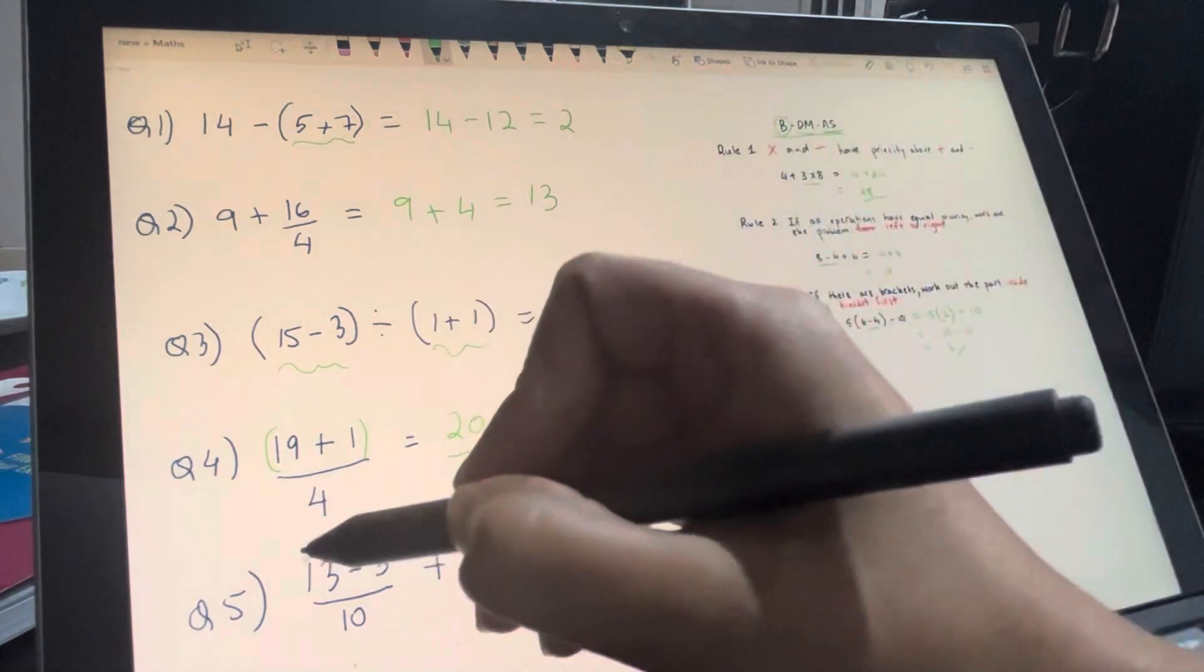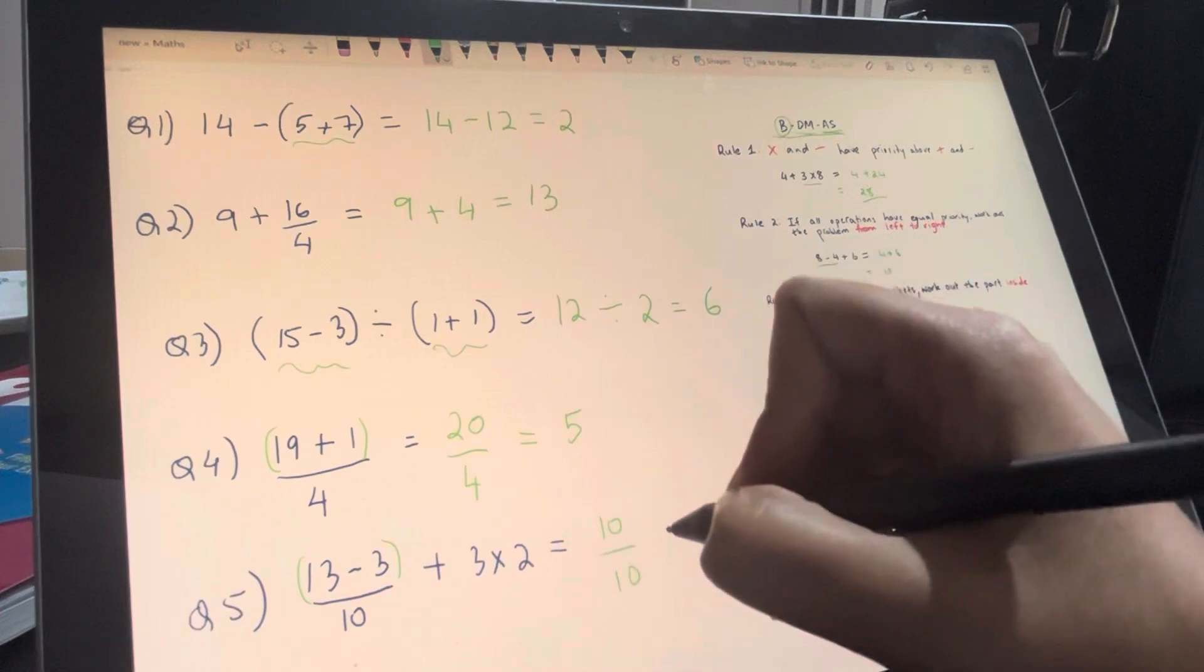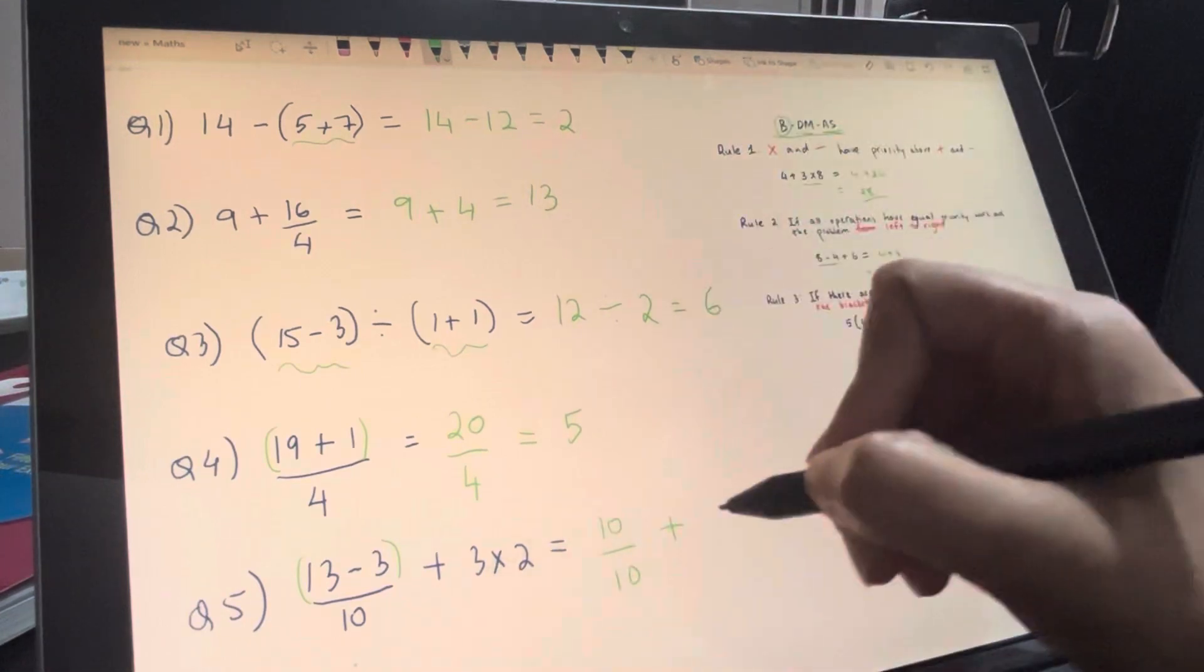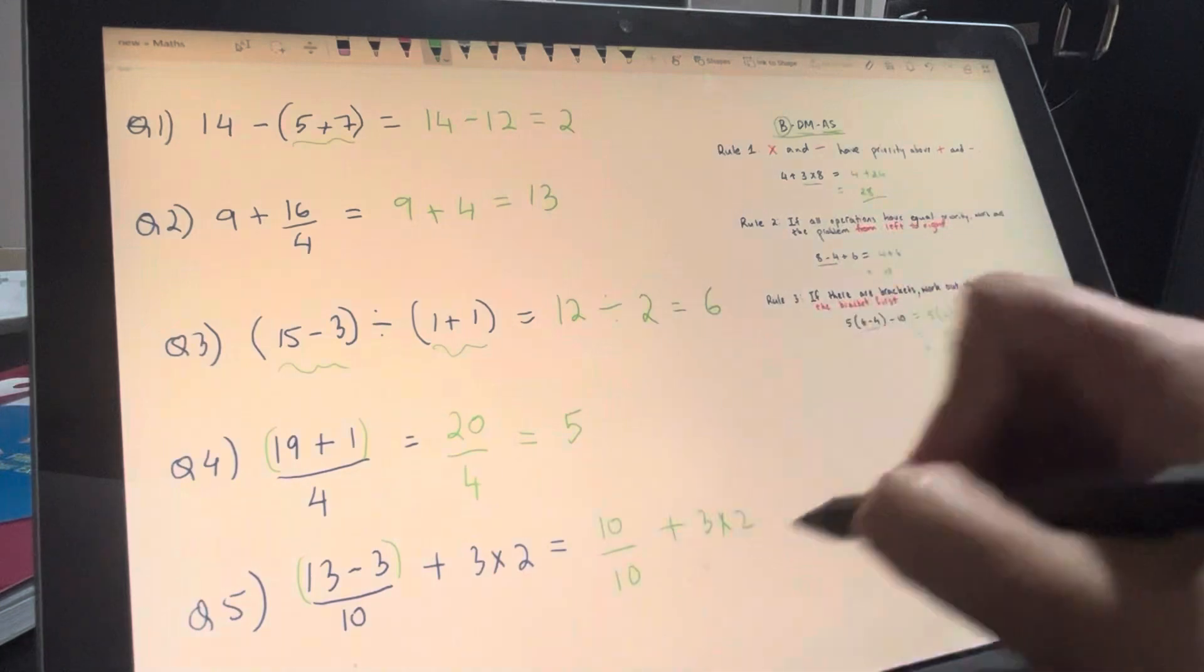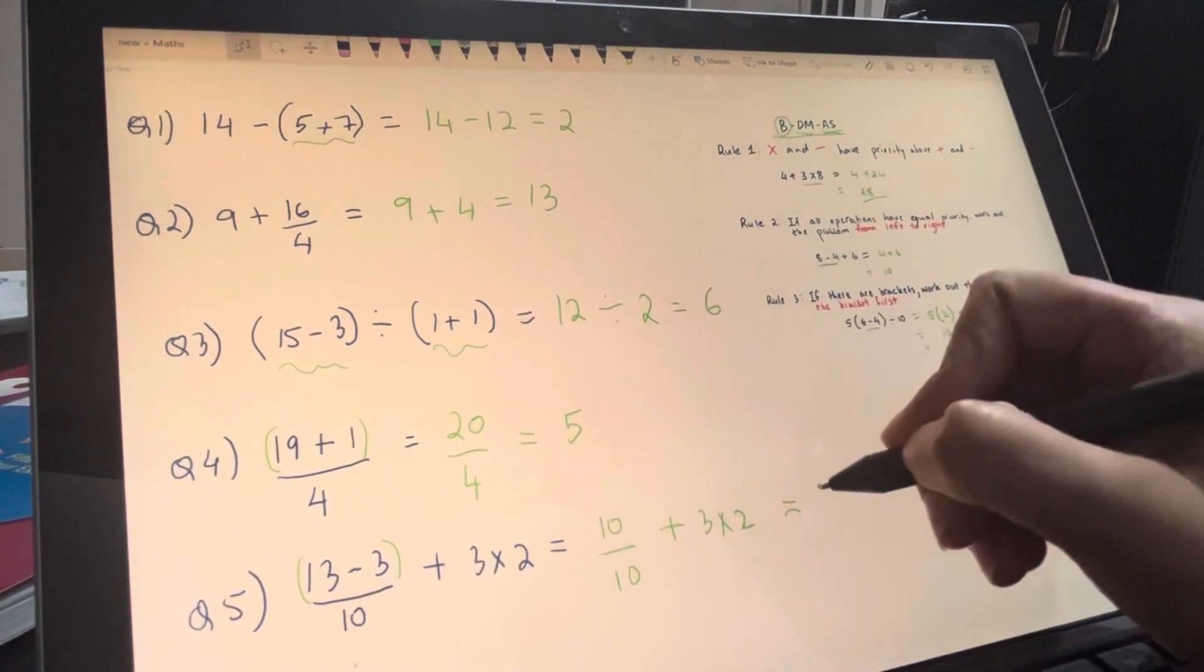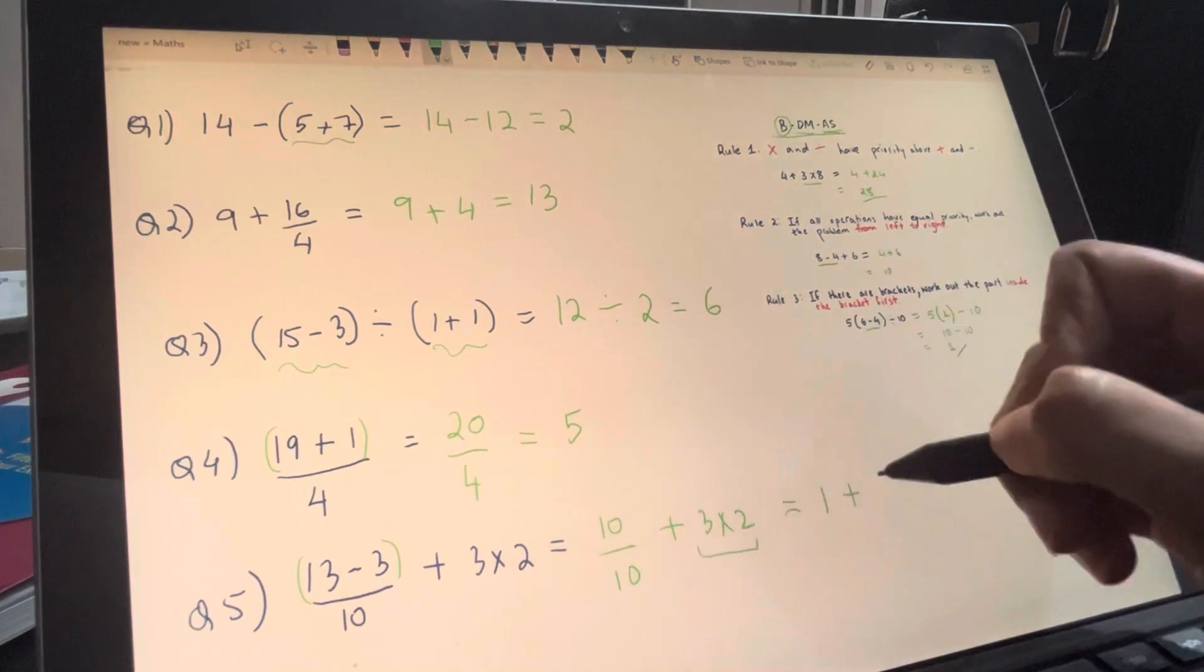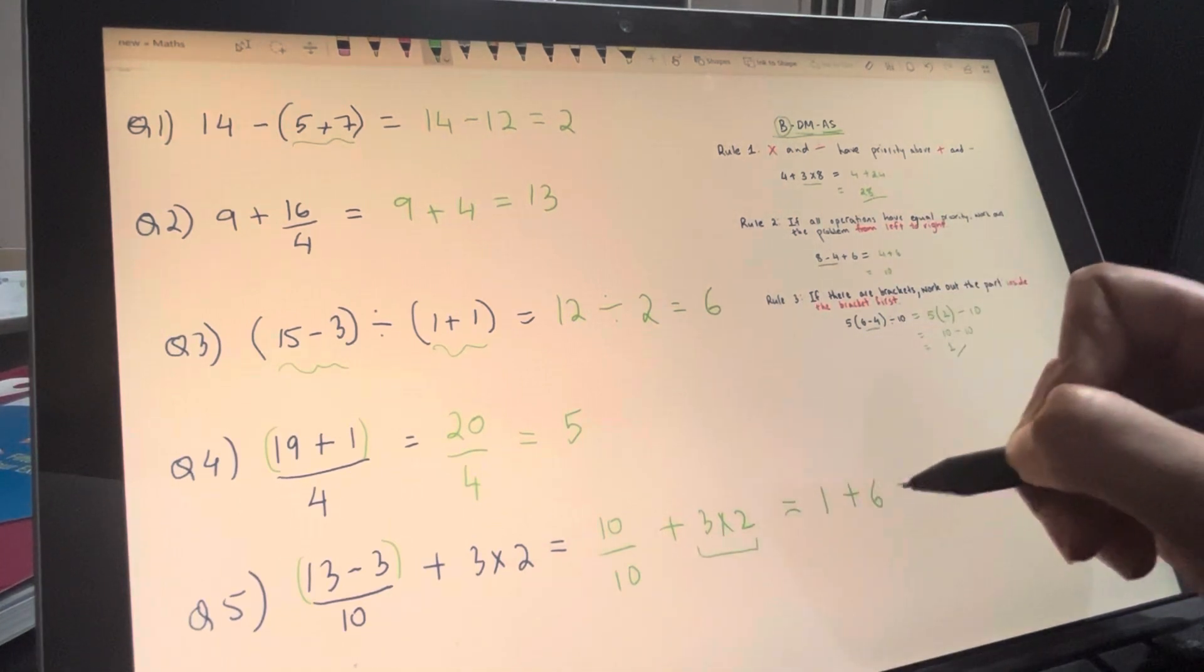Now for the last one, again, we're going to do this bracket first, so that's going to be 10 over 10, plus 3 times 2. So we've done the bracket first, and now the next thing we're going to do, well let's do the division first, because it comes first, so that's going to be 1. And then plus, we need to do this multiplication, so that's going to be 6. And then 1 plus 6 is 7.